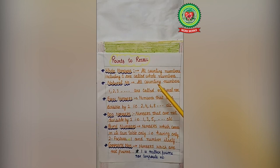Natural numbers: all counting numbers 1, 2, 3 are called natural numbers. Even numbers: numbers that are divisible by 2, these are 2, 4, 6, 8. Odd numbers: numbers that are not divisible by 2, these are 1, 3, 5, so on.